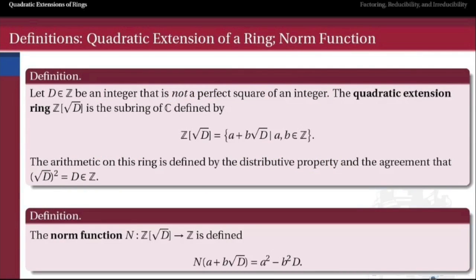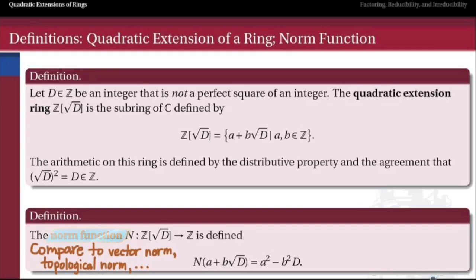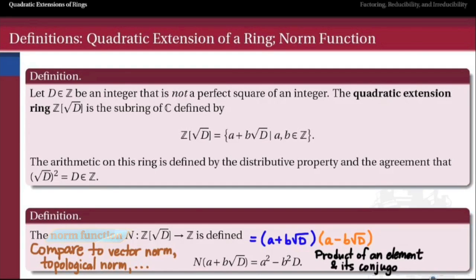Inside this ring we have a norm function. As promised, the norm function helps us decide whether a number is factorable. It takes a number in the quadratic extension ring and multiplies it by its own conjugate. We call it an arithmetic norm — a norm that tells us something algebraic about the structure of our extension ring and later our extension field. The conjugate just takes the new number and trades it for its additive inverse; multiplying a number by its conjugate gives its norm. Over the next couple of videos we'll see what the purpose of having a norm is and what it can do for us.